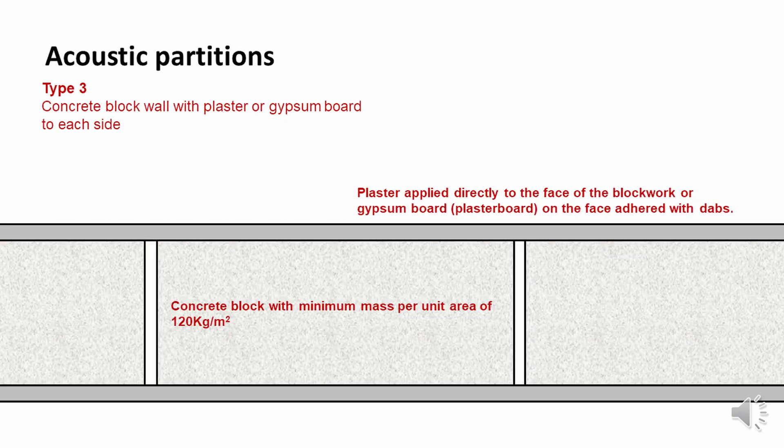The third type of acoustic partition that we could build is a concrete block wall with plaster or gypsum board to either side. This would be a solid wall with a minimum mass per unit area of 120 kilograms per meter squared.